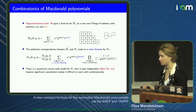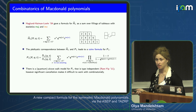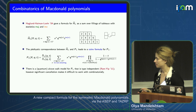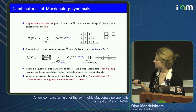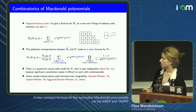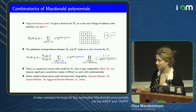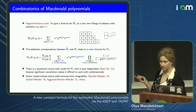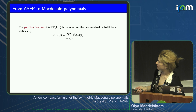There is also a quantum alcove walk model for P_lambda that is type-independent, due to Ram and Yip, though it is hard to work with combinatorially. There have also been quite a few formulas arising from integrability, including vertex model and colored lattice path formulas.